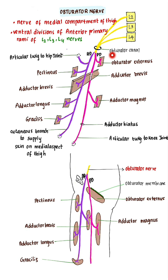Within the obturator canal, the obturator nerve divides into an anterior division and a posterior division. The anterior division of the obturator nerve supplies pectineus, adductor brevis, adductor longus, and gracilis. The anterior division passes behind pectineus and adductor longus, and it passes in front of adductor brevis.